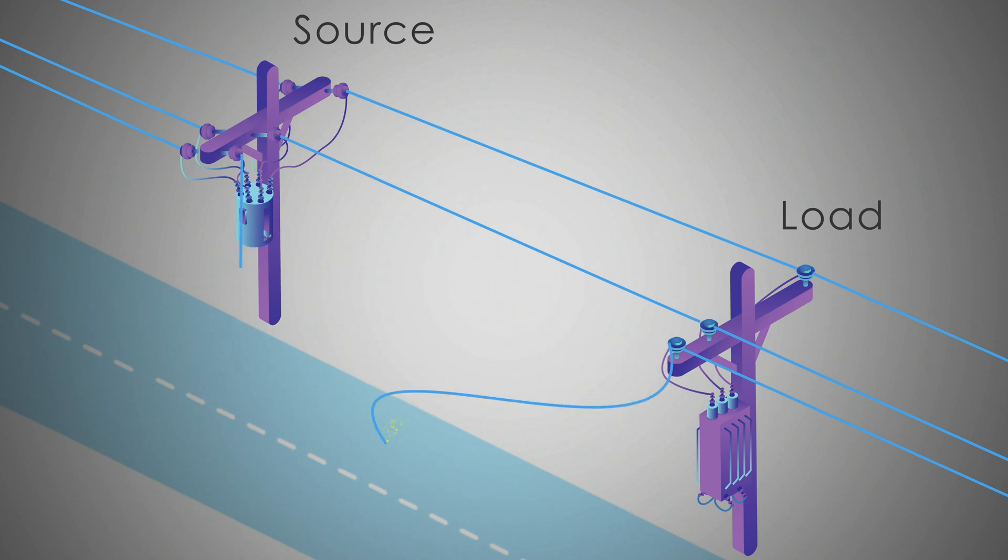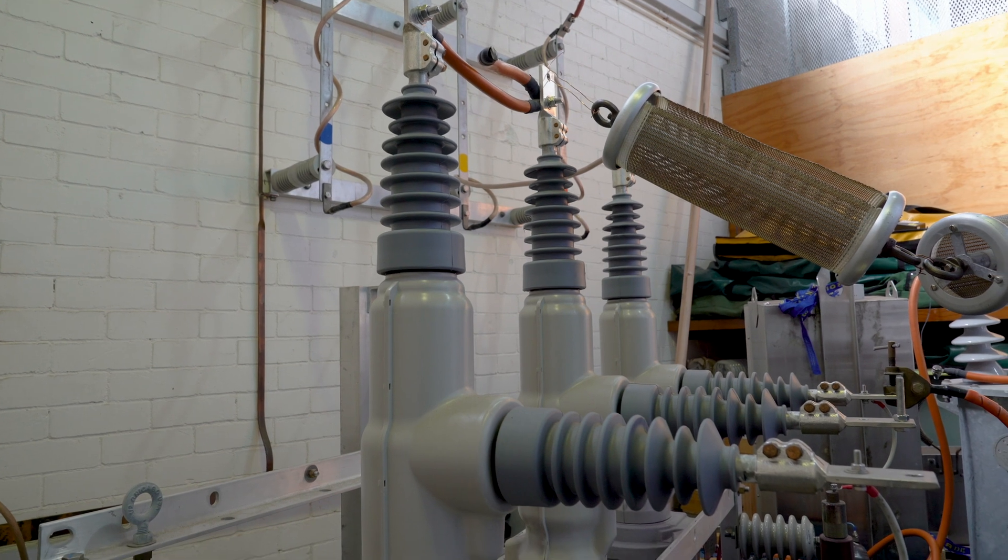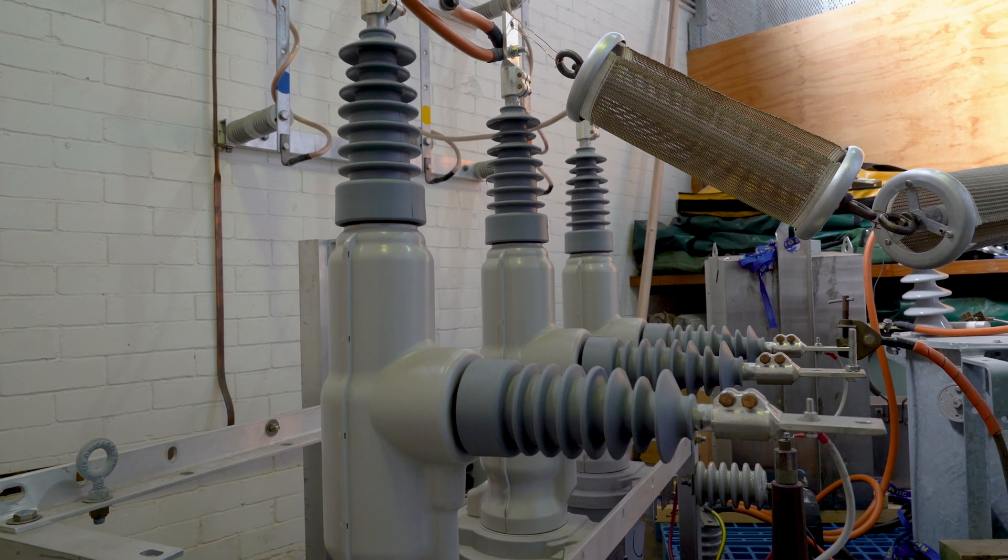But if the conductor falls on the load side, only a very small current of perhaps as little as 100 to 200 milliamps of earth fault current will flow. That's far too small for any high voltage protection system to accurately detect.